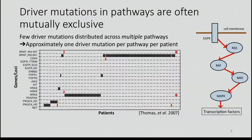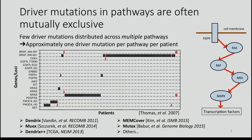To motivate that, I have a figure from Thomas et al. showing mutations in the RTK/RAS signaling pathway across different patients. In this matrix, genes are rows, patients are columns, and each mark represents a different mutation in a different sample. You can see that relatively few columns have more than one marker mutation, meaning samples have mutually exclusive mutations across the pathway. One explanation is that we need relatively few driver mutations responsible for cancer, distributed across multiple pathways, giving us approximately one driver mutation per pathway per patient.